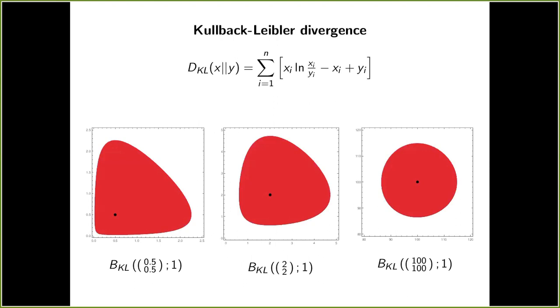However, you can see that their shape changes as the position of the center changes. So if we are very far away from the boundary of the positive octant, where the divergence is defined or which is the domain of f, the ball looks almost like a Euclidean ball. However, the closer we get to the boundary of the positive octant, the more triangular shape the ball has.